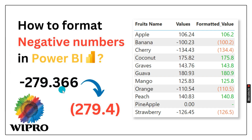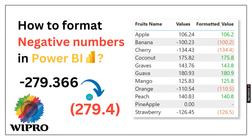The next requirement is we have to round off the value present after the decimal. Here after the decimal we are getting 366, and in the formatted value we show that as .4. The third requirement is if it's a negative number, we have to convert the value to red color. And if it is a positive number, then we have to represent it with green color.